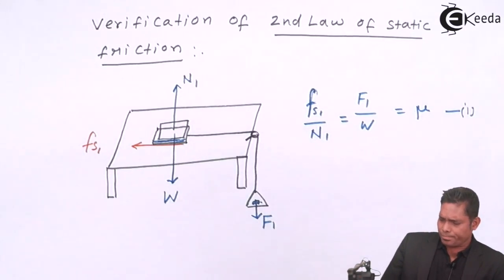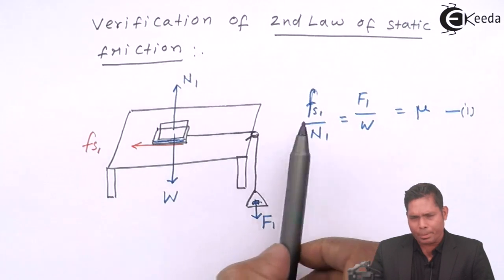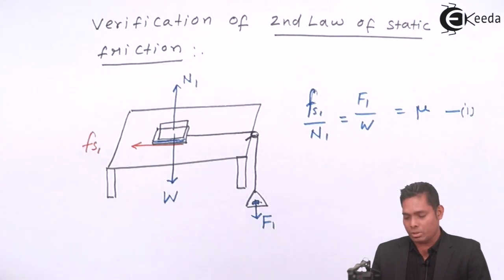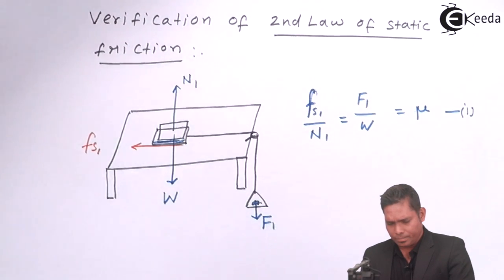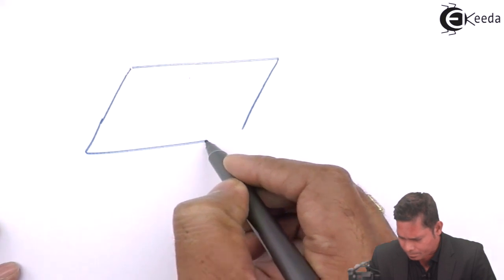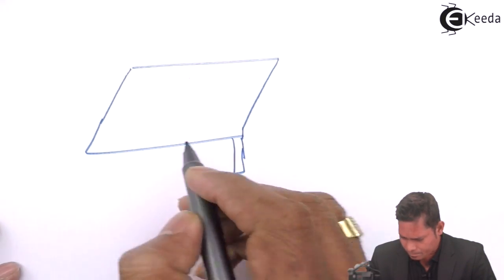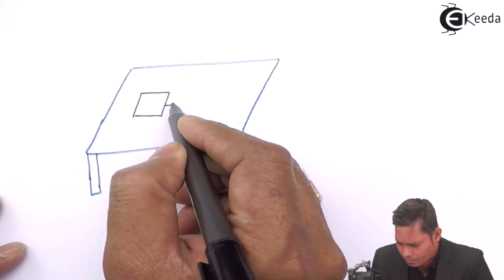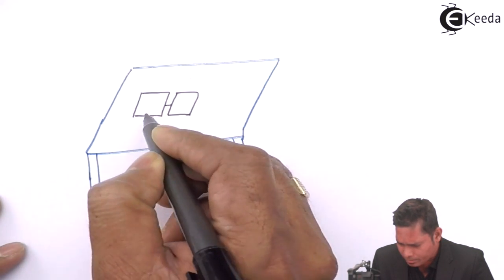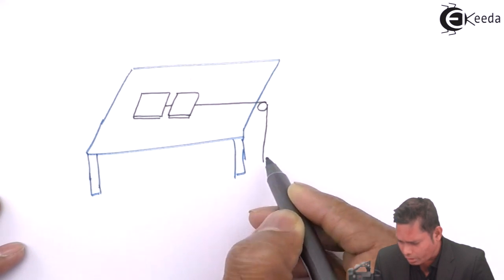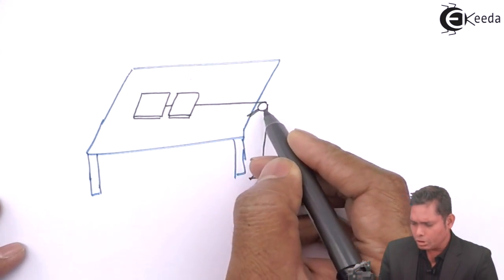In the second case, I will take these two blocks separately at a time, but connected separately by increasing the area two times. So, the diagram will be like this. I have this as a table. Now, the two blocks are placed one after the another. This is how this is placed. And this is a string. This is the pulley, the string.